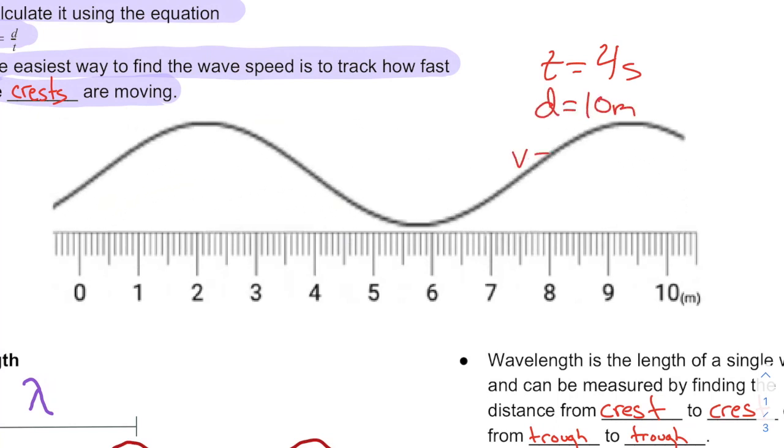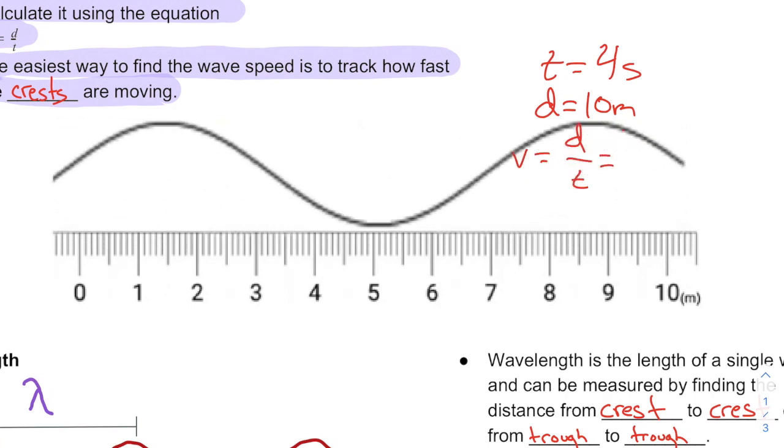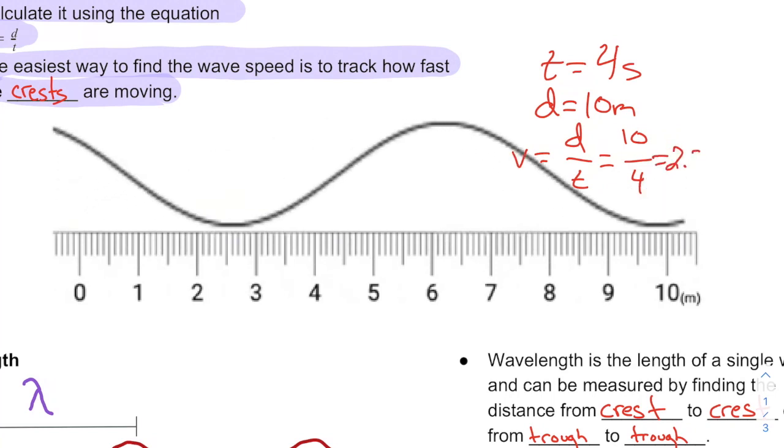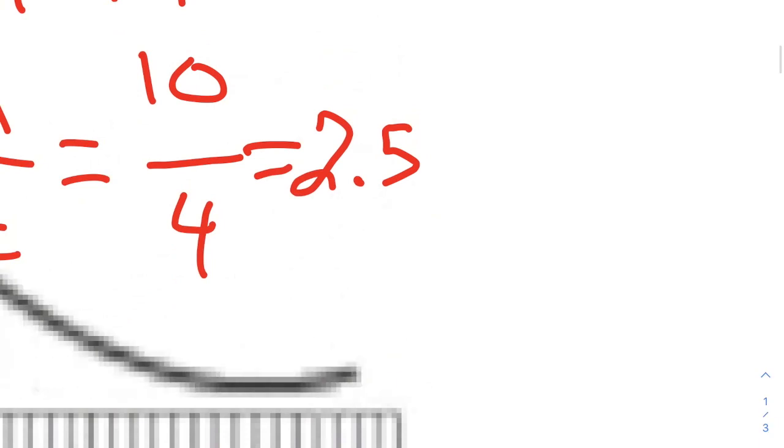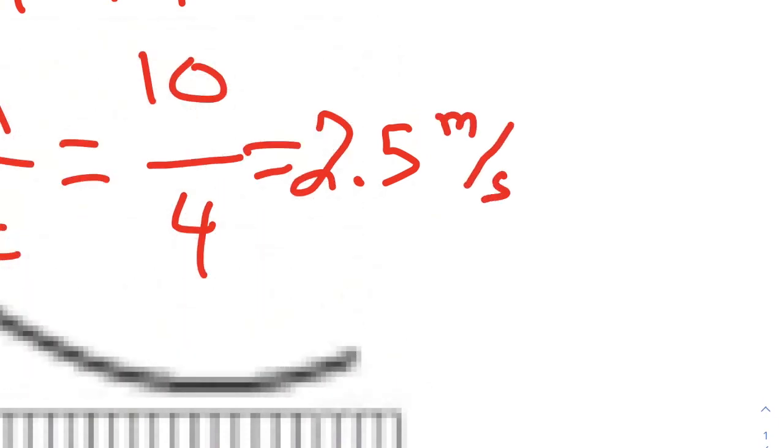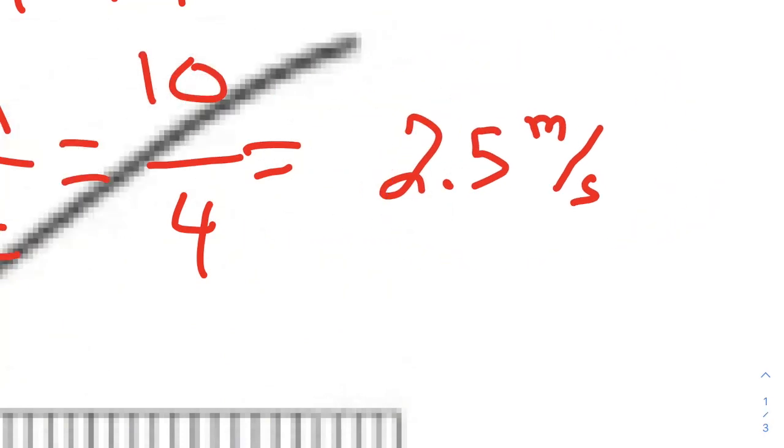And so we use our handy-dandy equation. Velocity equals distance divided by time. Our distance was 10. Our time was 4. 10 divided by 4 is 2.5. In physics, you never forget your units. This is a speed. It's a velocity. 2.5 meters per second. That's the wave speed. If you can find the velocity, then you've found the wave speed.